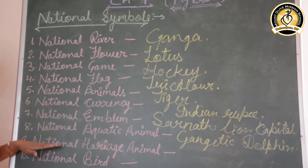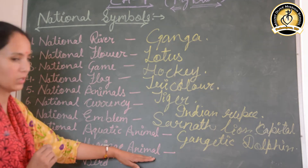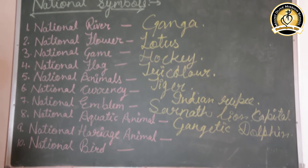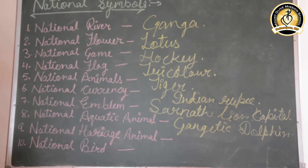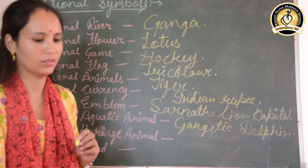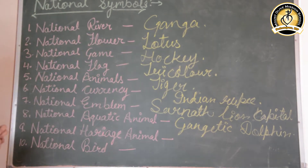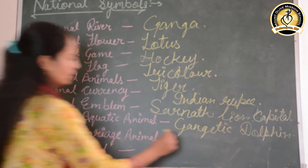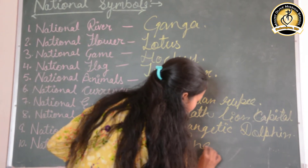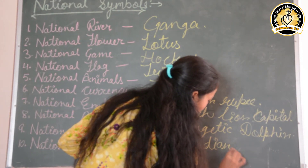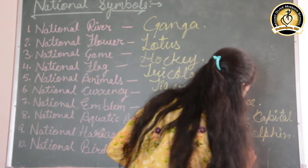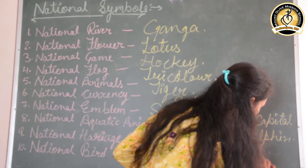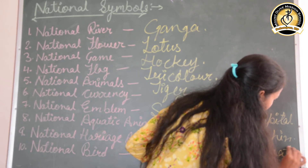The next one is the national heritage animal. What is our national heritage animal? Try to give the answer. Very good — the Indian Elephant! The Indian Elephant is our national heritage animal.